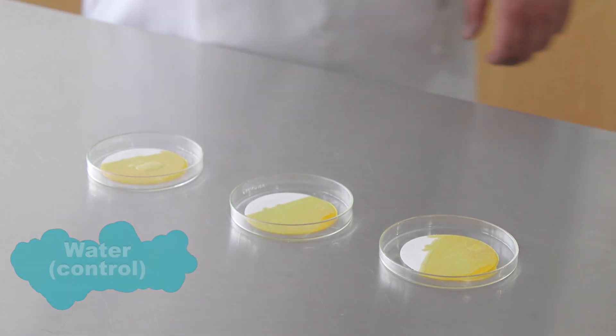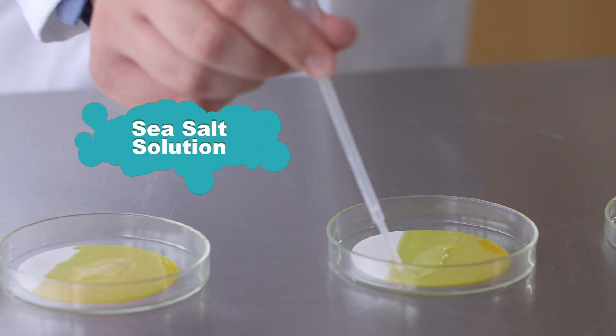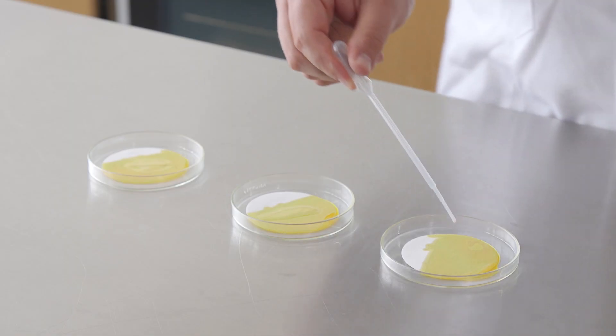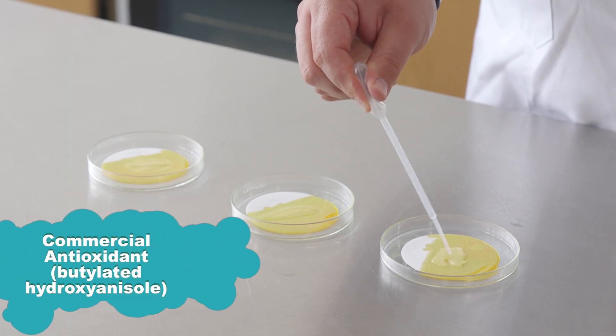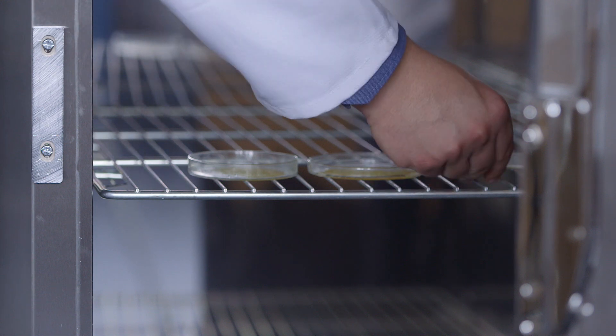One, just with water, which is our control. Two, with a sea salt solution. Three, with a commercial antioxidant, in this case BHA. Now place all of them in an incubator at around 40 degrees. Leave them for four to five days.